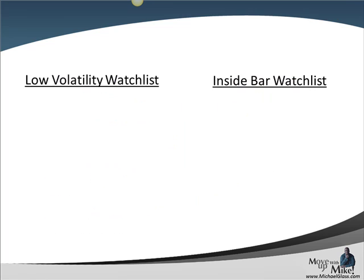Moving to our watch list: starting off with our low volatility watch list on the one-hour time frame using Bollinger Bands, we are going to be watching the dollar franc. For our inside bar watch list — comparing today's range to Wednesday — we'll be watching the dollar yen and the Aussie dollar.